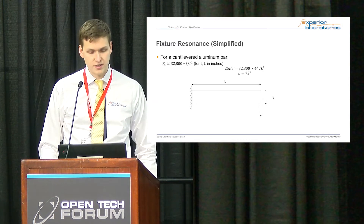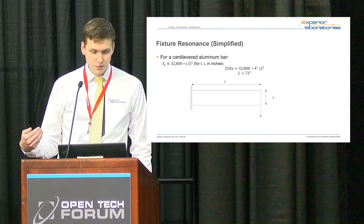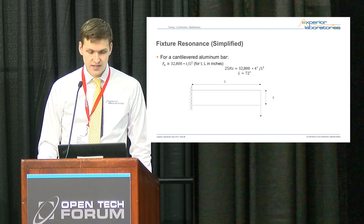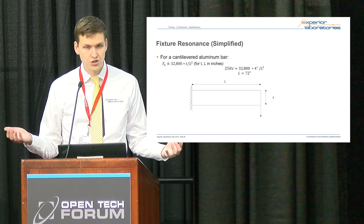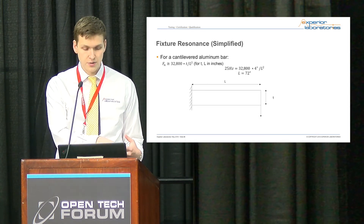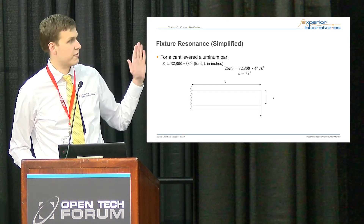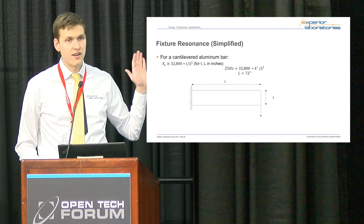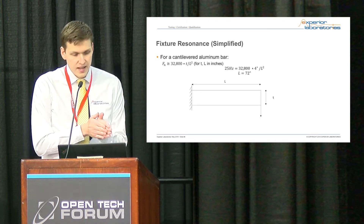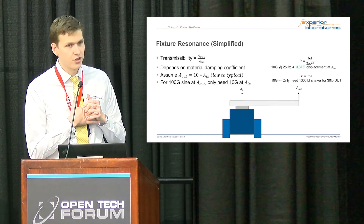Let's say you wanted to run that 25 Hz test but it has too much displacement. What if we design the beam to resonate at 25 Hz? You take 32,800 times a 4-inch cross-section — how long does it need to be? 72 inches. So the fundamental natural frequency at the tip, vibrating from the fixed end, will be 25 Hz — that's where you get the highest output. That output is defined as transmissibility: output acceleration over input acceleration.